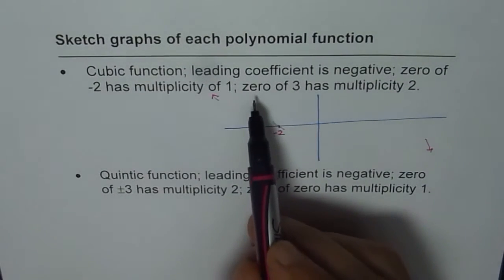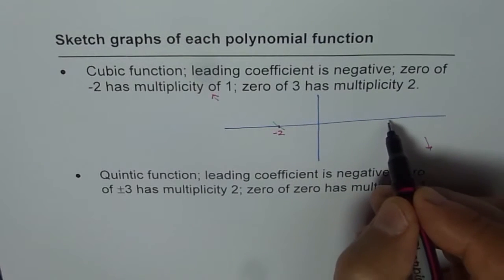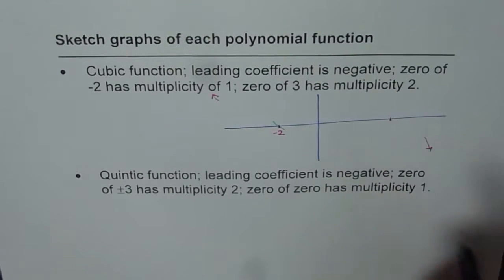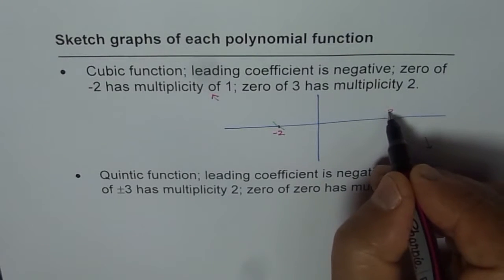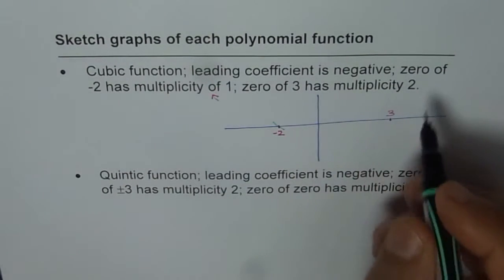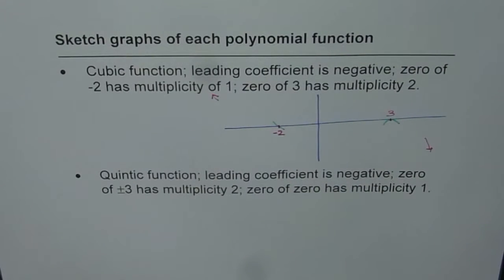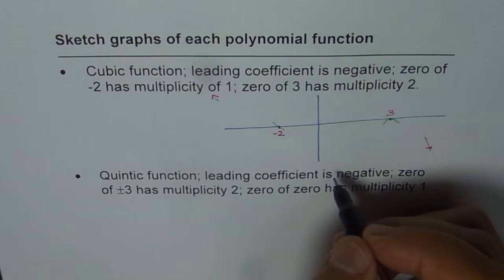Then we have 0 at 3, multiplicity of 2. So let us say this is 3 for us. And at this point 3, the multiplicity is 2. That means it behaves like a quadratic function, so it has to turn. So that is how we should analyze the zeros for the given function. Now that helps us to sketch the graph.